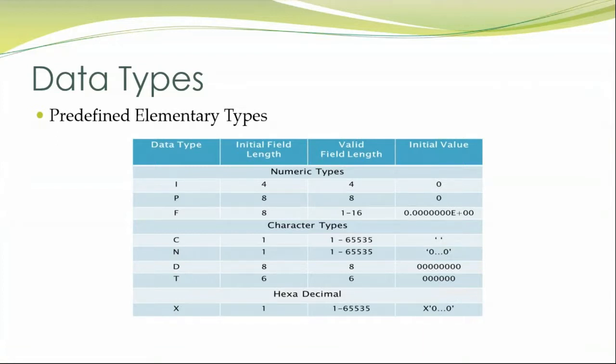We have one other data type which is called as a hexadecimal data type, which is denoted by X, whose initial field length is 1, which can range till 65,535 characters form.